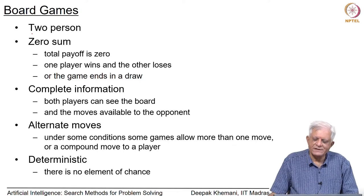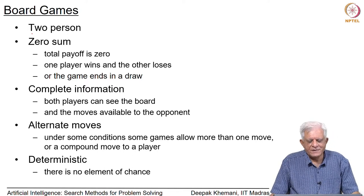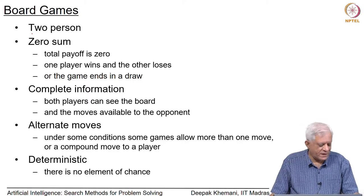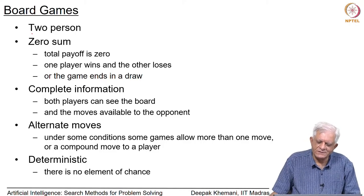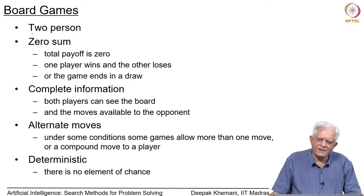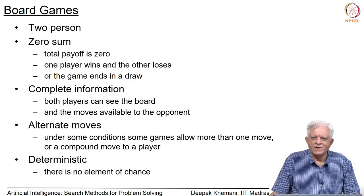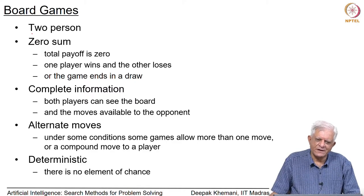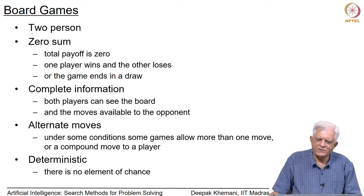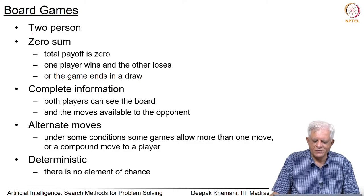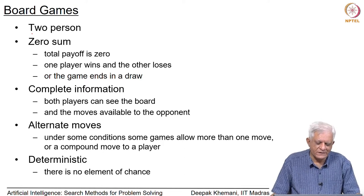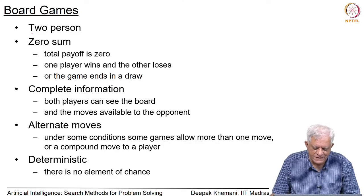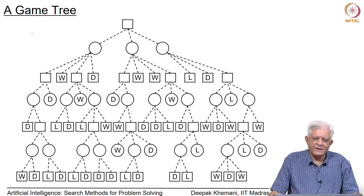These are deterministic games — there is no element of chance of any kind involved. So these are the simplest kind of games we can consider. This set does not include games like backgammon which has a throw of dice, or card games like poker and bridge, or games like Scrabble where there is an element of chance. These are two-person, zero-sum, complete-information, alternate-move, deterministic games.